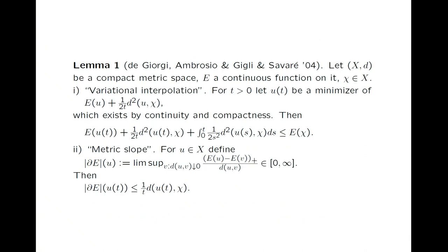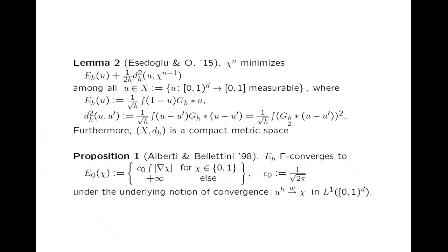Let me briefly recap what we did yesterday. I started with the minimizing movement work of De Giorgi, which by the right type of interpolation recovers the exact energy dissipation inequality without loss. I formulated two results: first, that the thresholding scheme is indeed a minimizing movement scheme; and second, that this minimizing movement scheme relates to mean curvature flow in the sense that the energy functional converges to the area of the interface written in BV fashion.